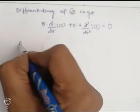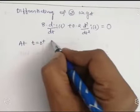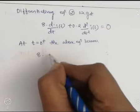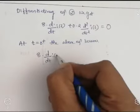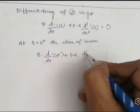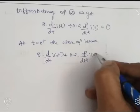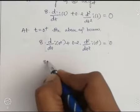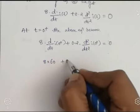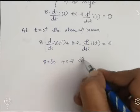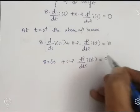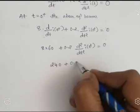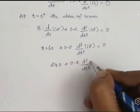Substituting t equal to 0 plus into the differentiated equation, it becomes: 8·dI(0+)/dt + 0.2·d²I(0+)/dt² = 0. We already calculated dI(0+)/dt = 60 amperes per second. Substituting: 8 times 60 plus 0.2 times d²I(0+)/dt² equals 0.